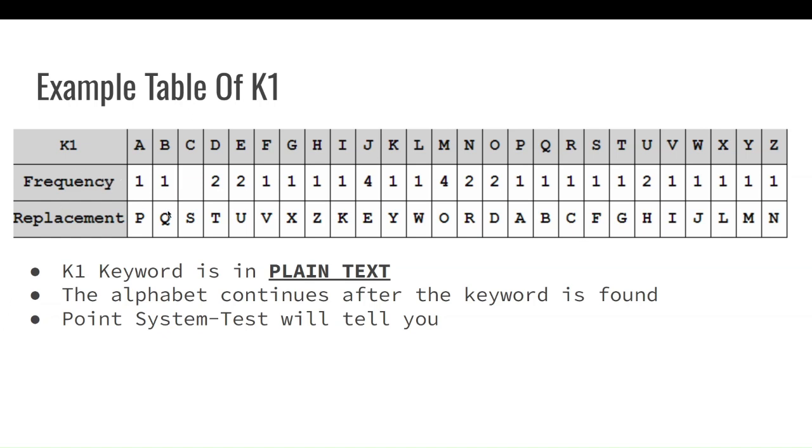Now, we also have frequency. Make sure not to think that the frequency is of the ciphertext, but it's the frequency of the replacement letters. That's really important to know, just so you don't make any mistakes. So, just know that the frequency corresponds to replacement in K1 alphabet when solving an aristocrat.